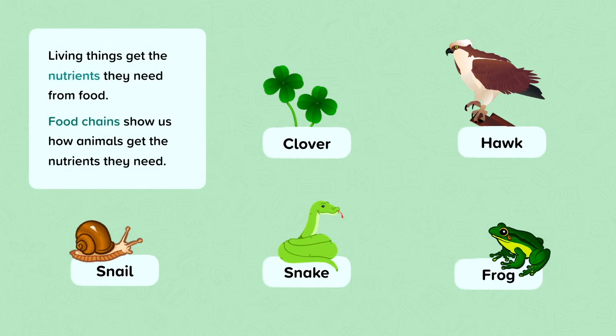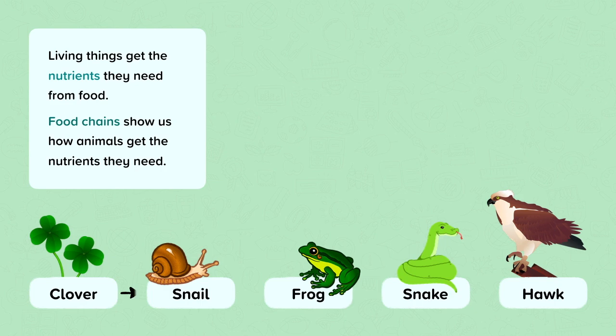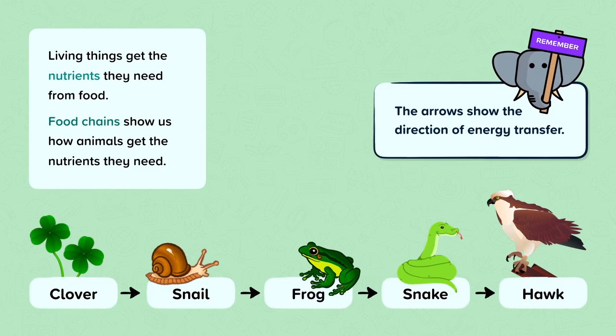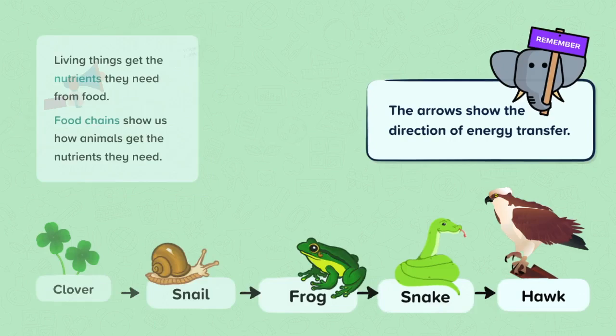Here are some living things. Do you think you could put them in order of who eats who? Here is the answer. It's important to remember that the arrows show the direction of energy transfer. The energy in the clover is transferred into the snail. The energy in the snail is transferred into the frog and so on. It is a common mistake to draw the arrows pointing the wrong way, so make sure the arrows show the direction of energy transfer.